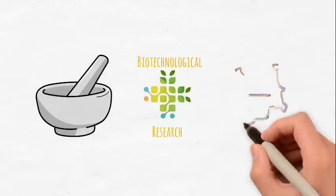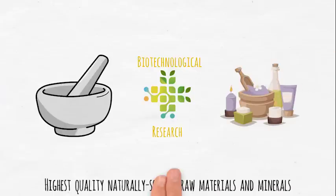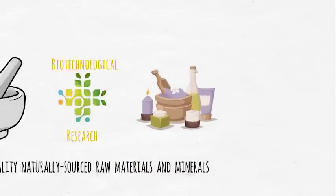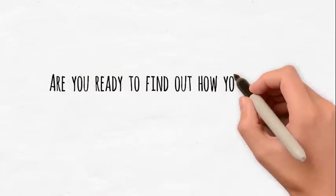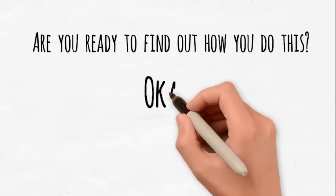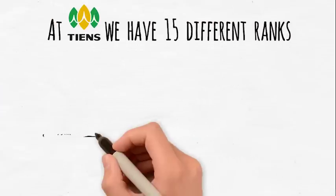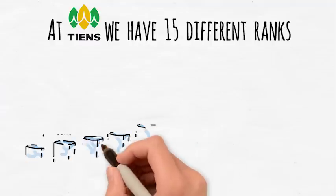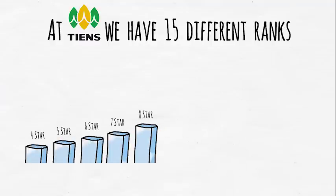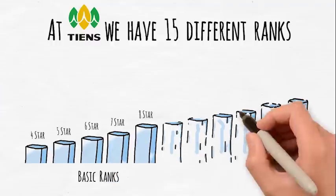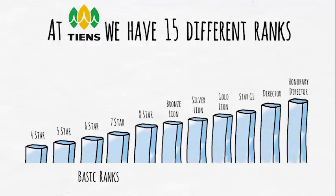Each product is produced only from the highest quality, naturally sourced raw materials and minerals. Are you ready to find out how you can do this? At Tienz, we have 15 different ranks that you can achieve, and each one opens up more lucrative opportunities. Starting with the basic ranks which are star rated, you can build up volume points which will allow you to gain entry into the next level. Depending on how much work you put in, you can work through these ranks quickly.